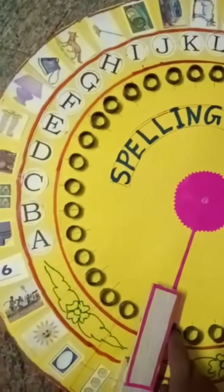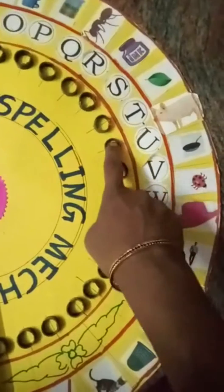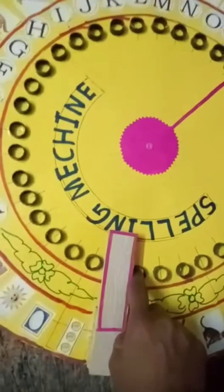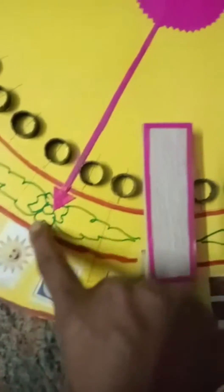Now, other example: sun. Child should say the spelling first, S. Then U and last N. Now, the arrow is showing the sun picture.